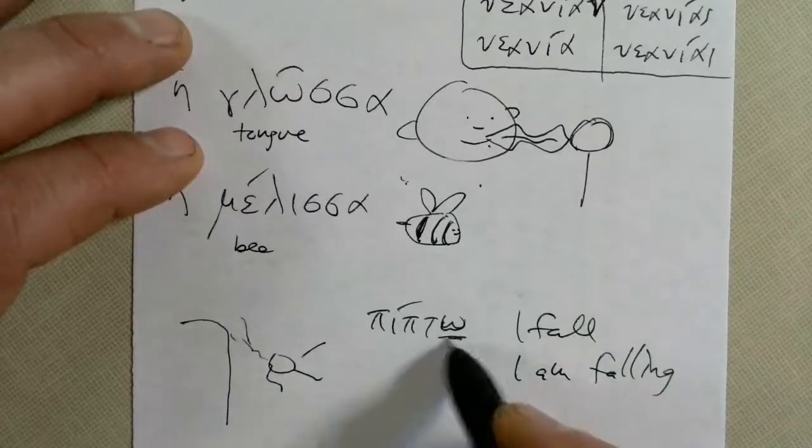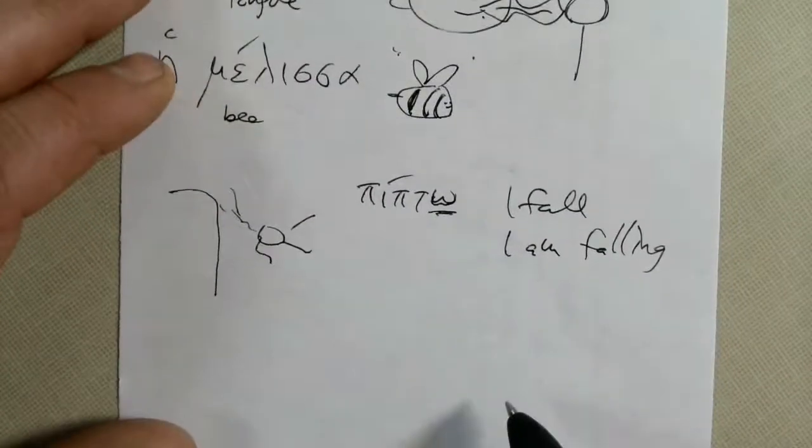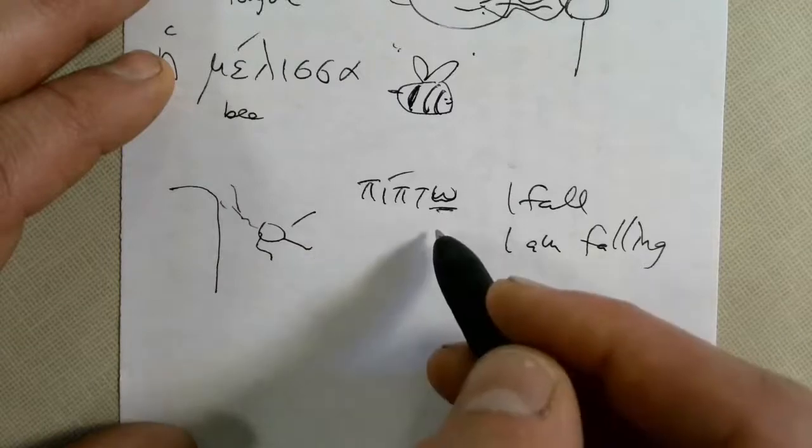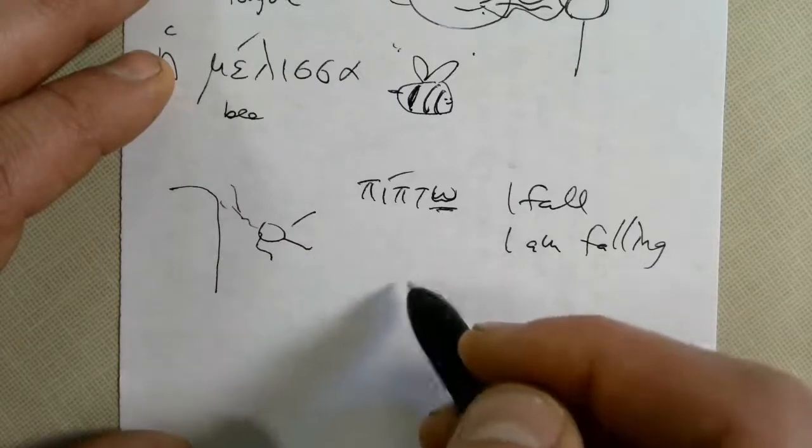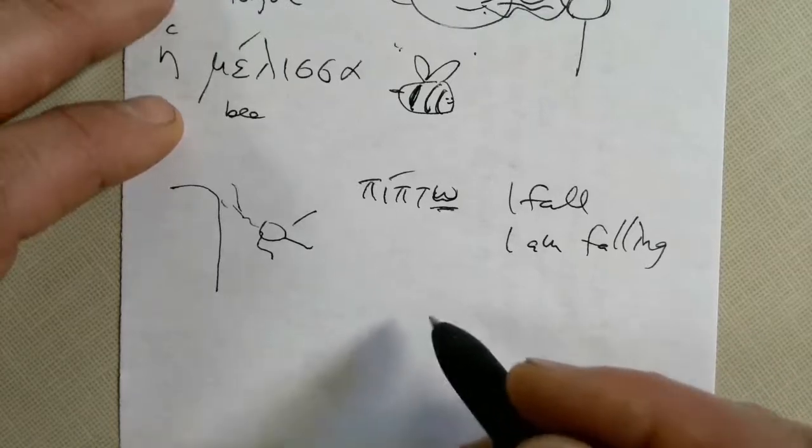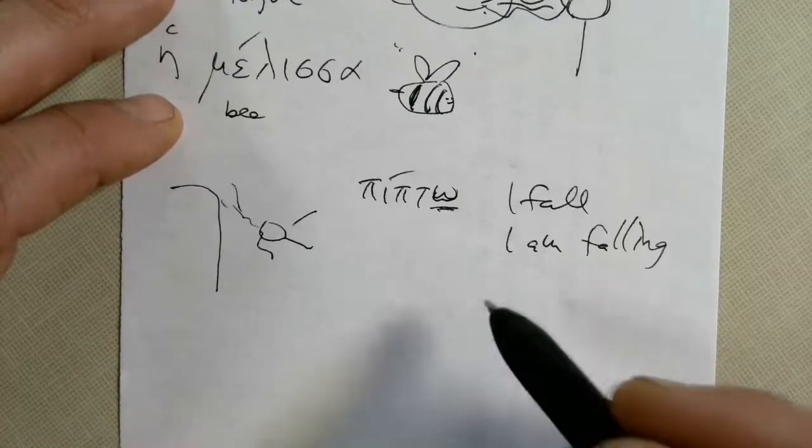And if you'll notice the ending is oh, so it's just like echo. You don't need to put flashcards for peepto. Peeptis, peepti, peeptomin, peepties, peepde, peep, peeptete, ol peeptete, peeptetate or peeptusin. It's the same.